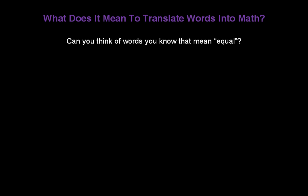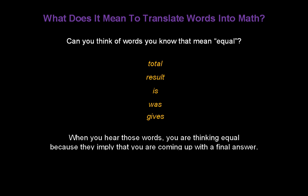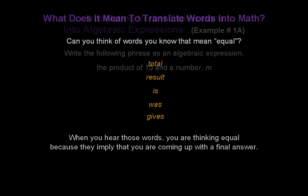Can you think of words you know that mean equal? Total, result, is, was (past tense of is), gives. When you hear those words, you're thinking equal because they imply you're coming up with a final answer.